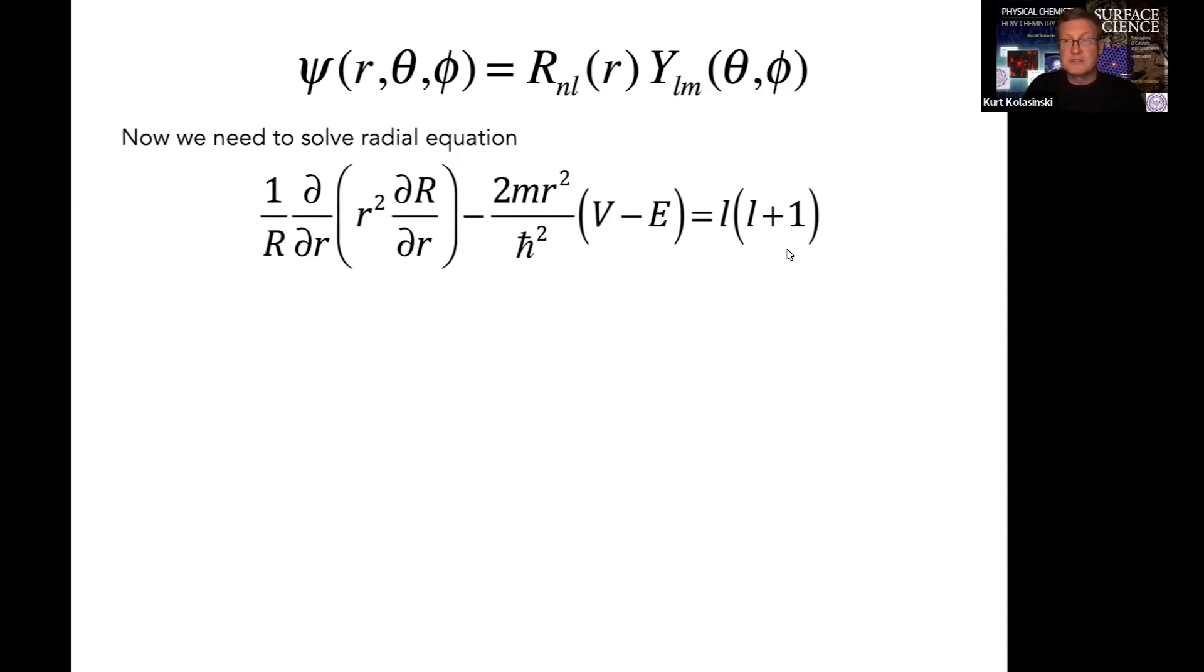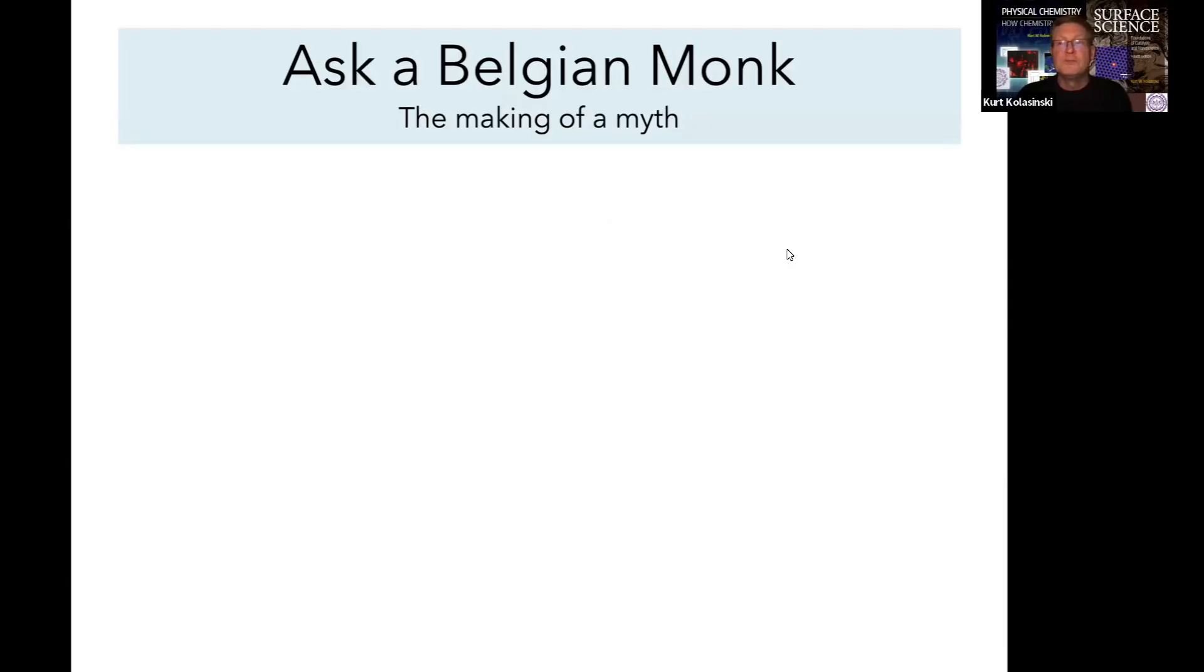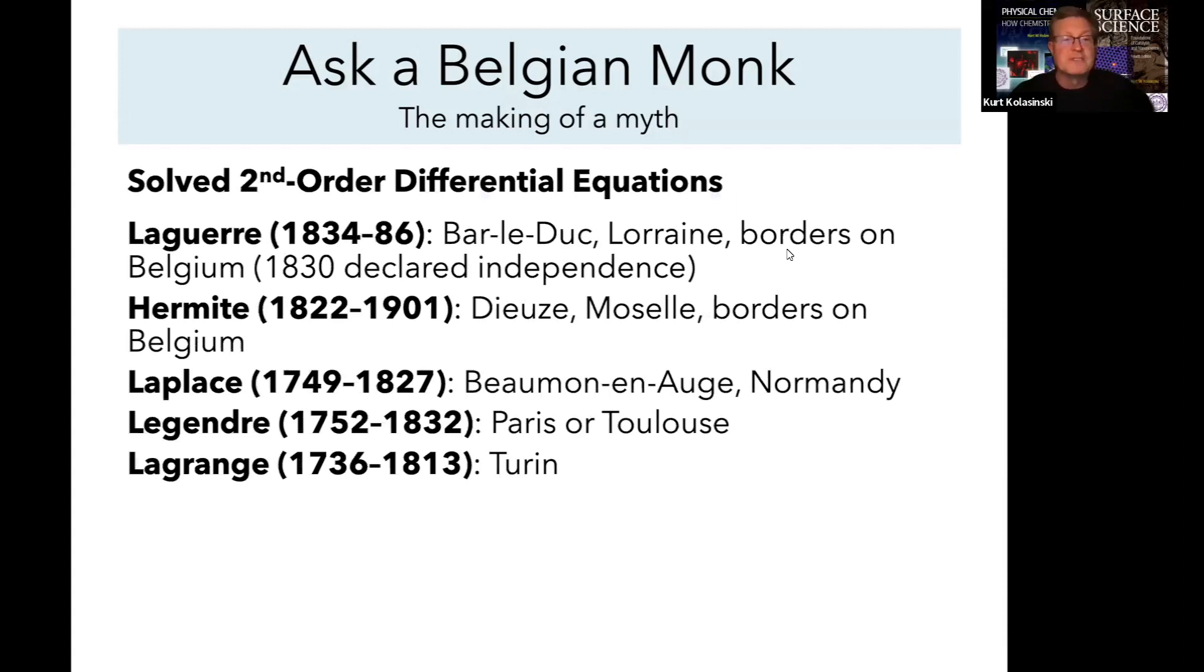How do we solve a second-order differential equation? You ask a Belgian monk. We need to look back on what has been done and use somebody else's solution. The Belgian monks have been doing this. We know the names associated with functions we're going to use: Laguerre, Hermite, Laplace, Legendre, Lagrange. These places might not be close to Belgium, but in Napoleonic times both Belgium and Italy were part of the French Empire, so they must have had a holiday in Belgium. They all qualify as Belgian monks.